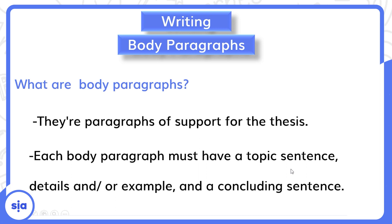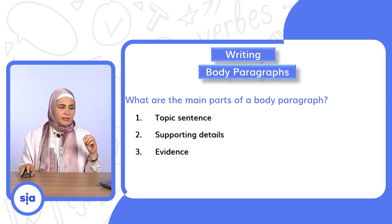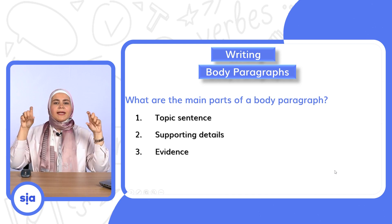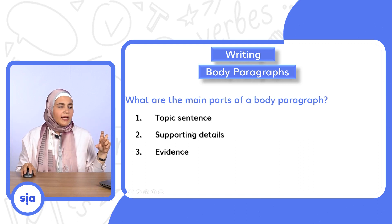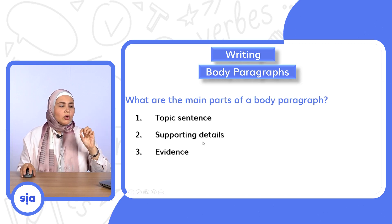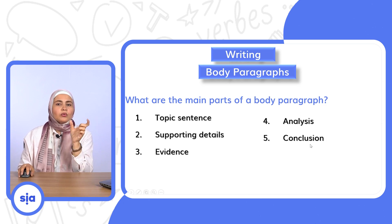Each body paragraph must have: a topic sentence — جملة رئيسية، details — تفاصيل، examples — أمثلة، and a concluding sentence — جملة الختام. What are the main parts of a body paragraph? Number one: topic sentence — دي الجملة الرئيسية اللي بقول فيها الفقرة دي هتتكلم عن إيه. Number two: supporting details. Number three: evidence — دليل. Number four: analysis — تحليل. Number five: conclusion — جملة الختام.